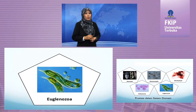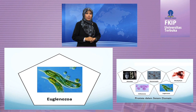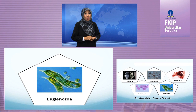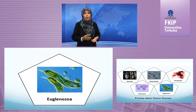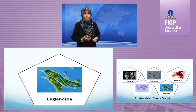Euglenozoa memiliki flagel; ada yang bersifat fotosintetik, misalnya Euglena, ada yang bersifat parasit, misalnya Tripanosoma. Euglena dan kerabatnya bersifat autotrof, tetapi ada pula yang heterotrof, yaitu menyerap molekul organik dari lingkungannya atau menelan mangsa secara fagositik. Euglenozoa yang parasitik mempunyai mitokondria yang relatif besar yang berhubungan dengan organel kinetoplas yang menyimpan DNA inti, sehingga dikelompokkan sebagai kinetoplastida. Kelompok kinetoplastida ini bersimbiosis dan bersifat patogen terhadap inangnya dan menyebabkan penyakit tidur pada manusia. Penyakit ini menyebar melalui gigitan lalat tse-tse.